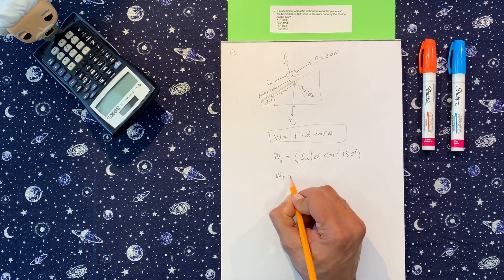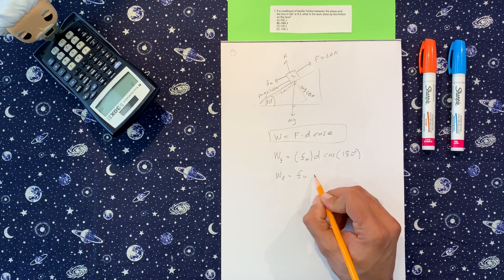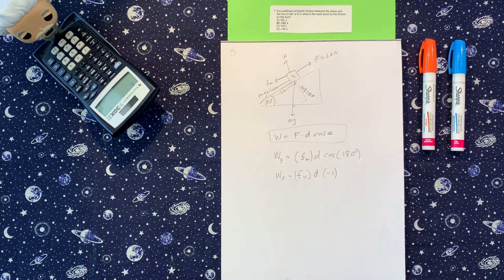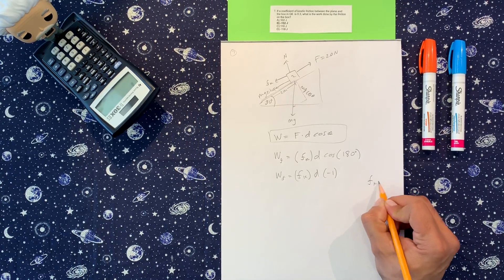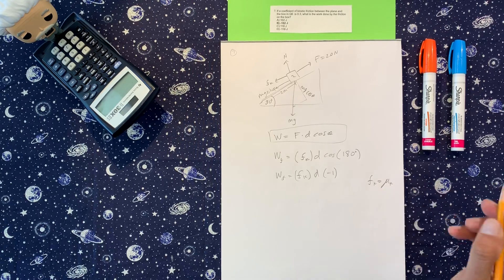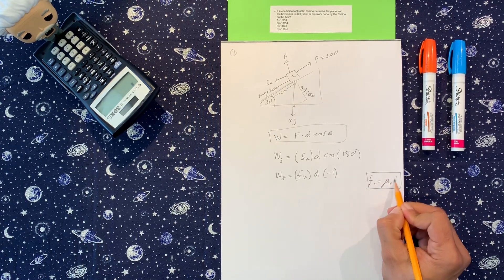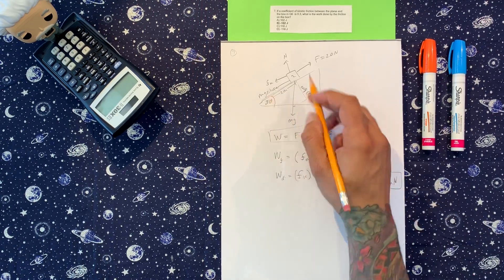We got work friction. I'm going to leave that for now. We got times displacement, and this is negative one. So friction, we know the formula, is mu kinetic times the normal.